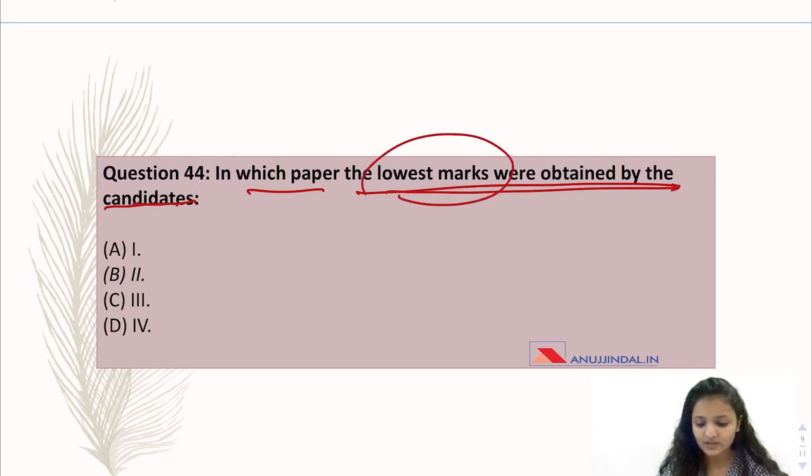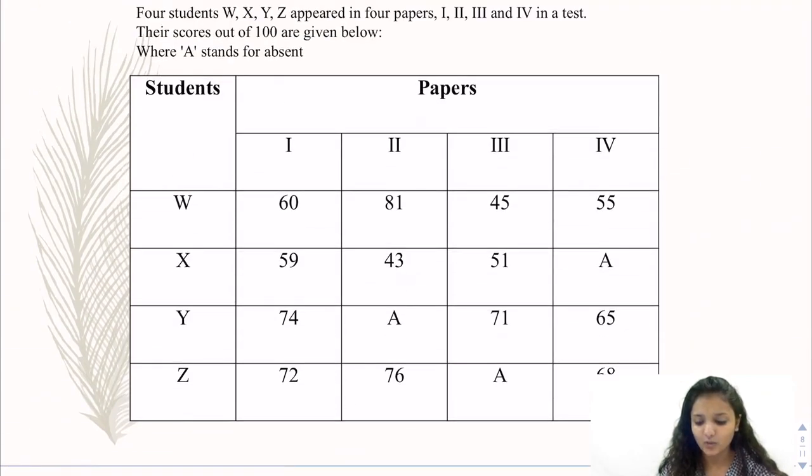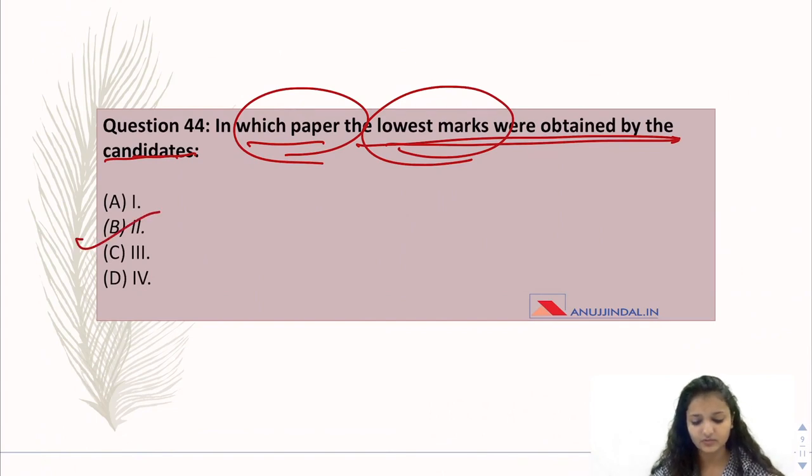Because here we have to ask the lowest marks in which paper. This is a very simple question. If you analyze the whole chart and data, then the lowest marks is 43. And this 43 is in paper 2. So the answer here is 2nd. But people are confused. They try to calculate the paper-wise aggregate and they generally tend to mark option 3, which is wrong.